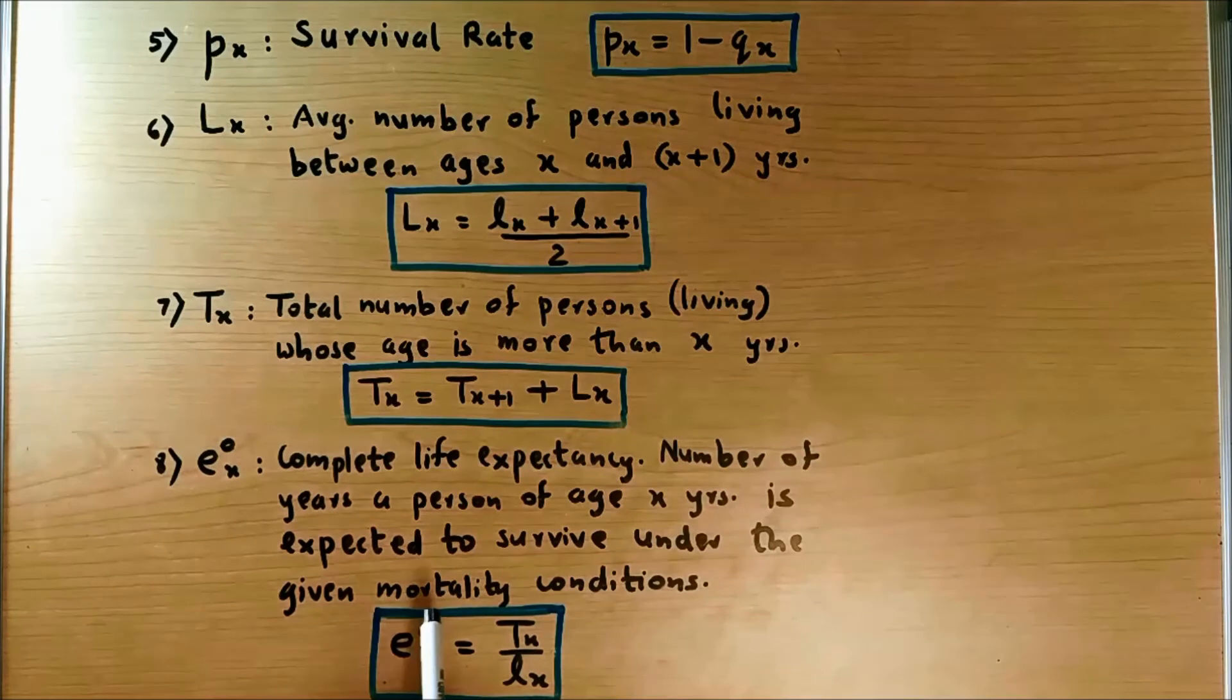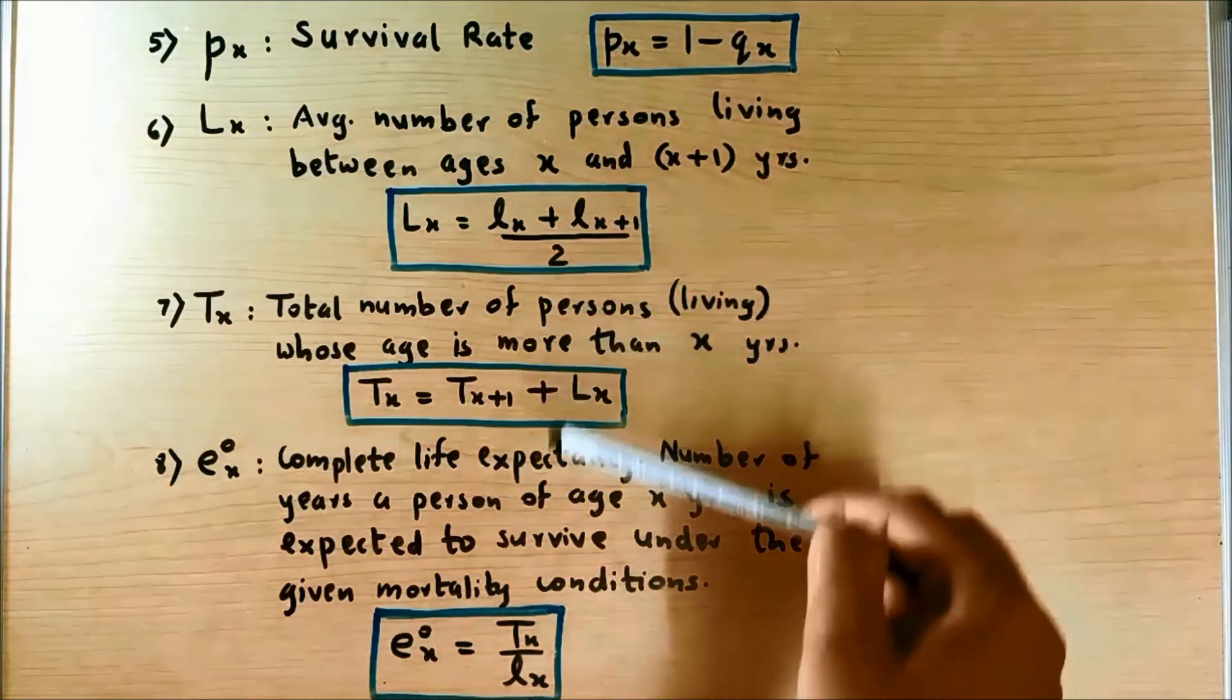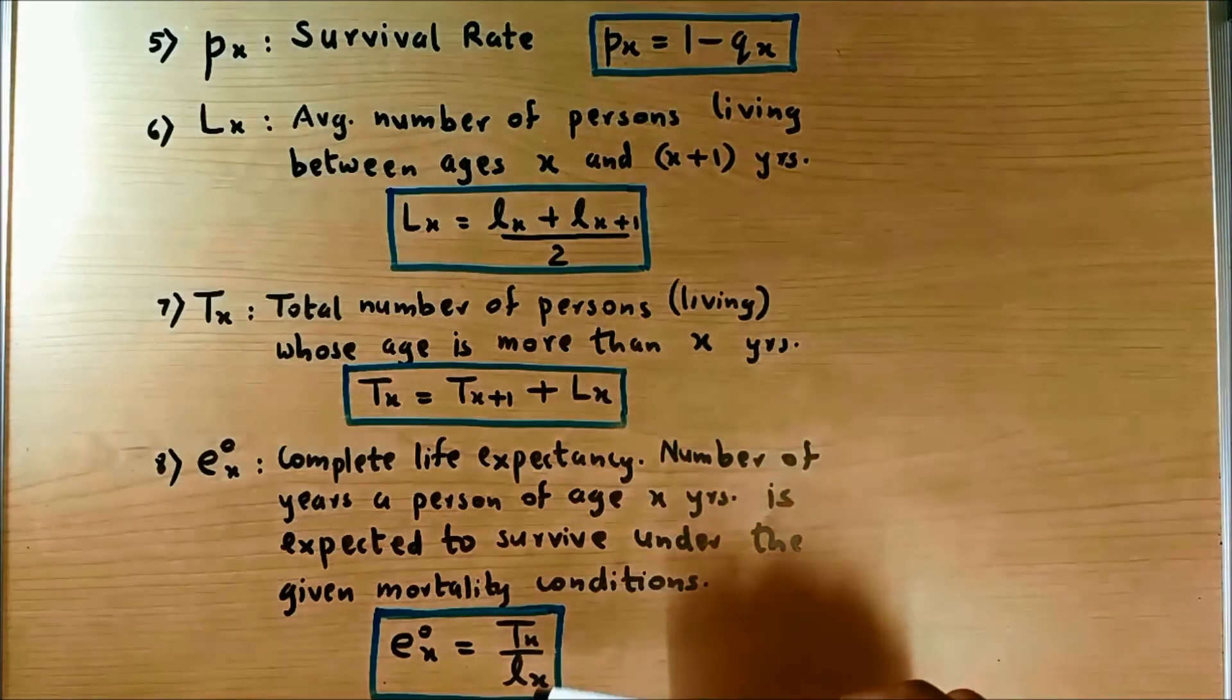And it is calculated as E zero X equal to TX, capital TX, divided by small LX. Remember, don't make this mistake. Here it is lowercase LX, living at the age X years. So this is how we calculate the remaining four terms.